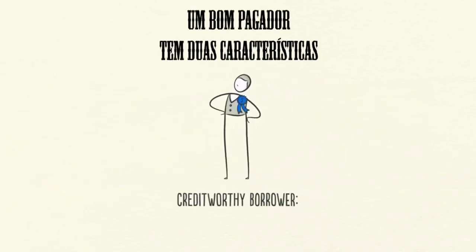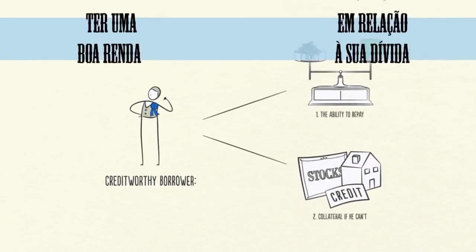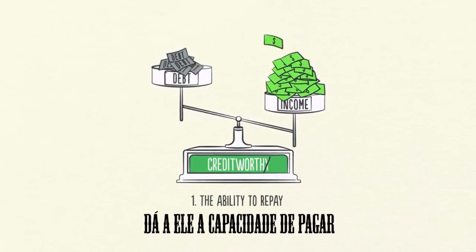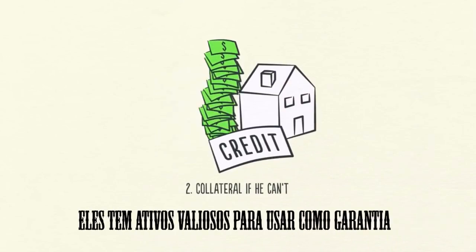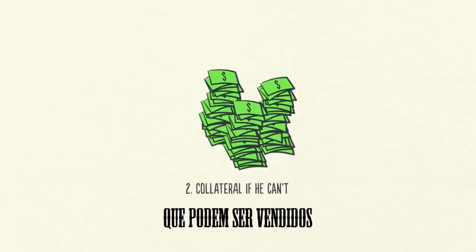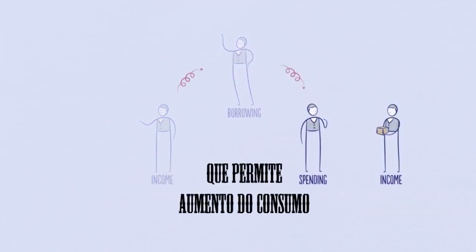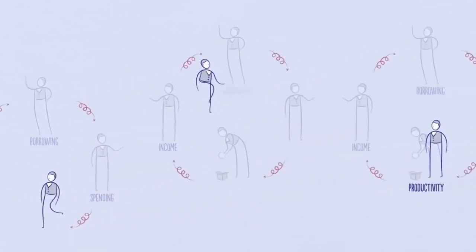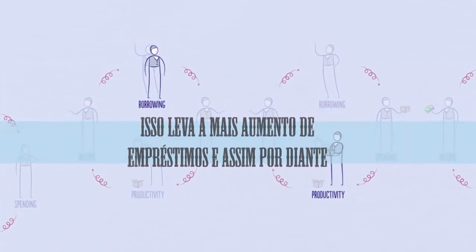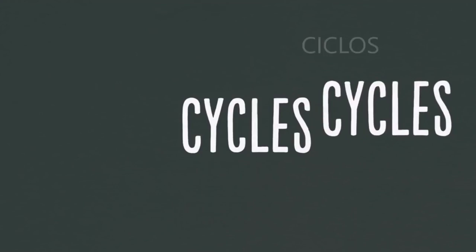A credit-worthy borrower has two things: the ability to repay and collateral. Having a lot of income in relation to his debt gives him the ability to repay. In the event that he can't repay, he has valuable assets to use as collateral that can be sold. So increased income allows increased borrowing, which allows increased spending. And since one person's spending is another person's income, this leads to more increased borrowing. This self-reinforcing pattern leads to economic growth and is why we have cycles.